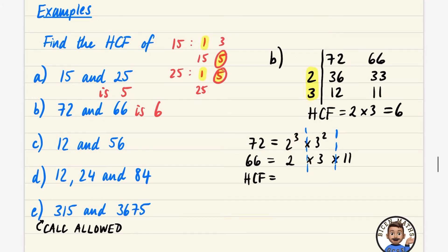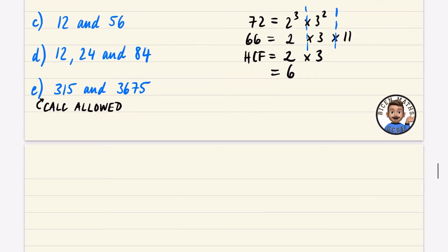For the highest common factor: the power of 2 — the 2¹ in 66 is smaller, so it's the loser, giving us 2. We both have a 3, and 3¹ in 66 is the loser, giving us 3. The 11 has nothing to compete with, so we write nothing. 2 × 3 = 6, the same answer.